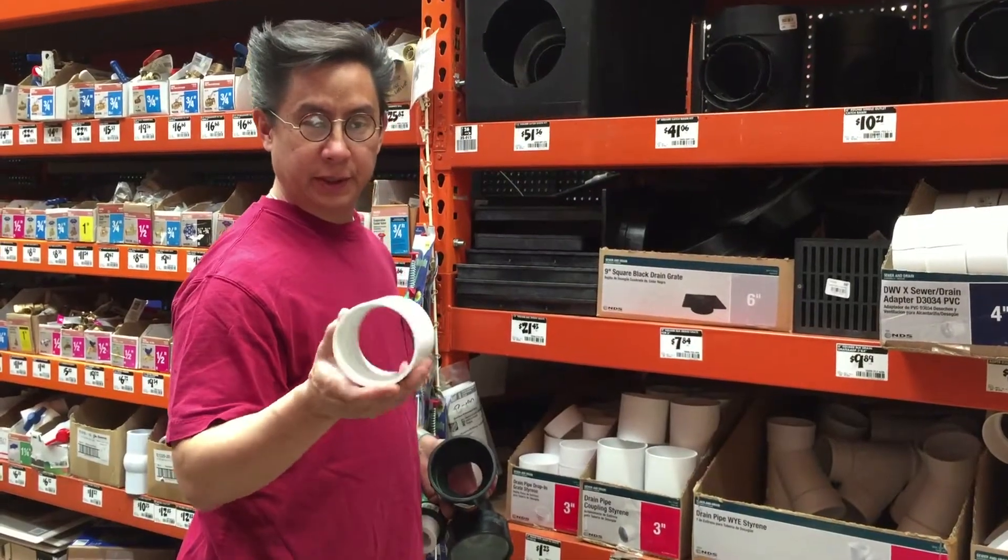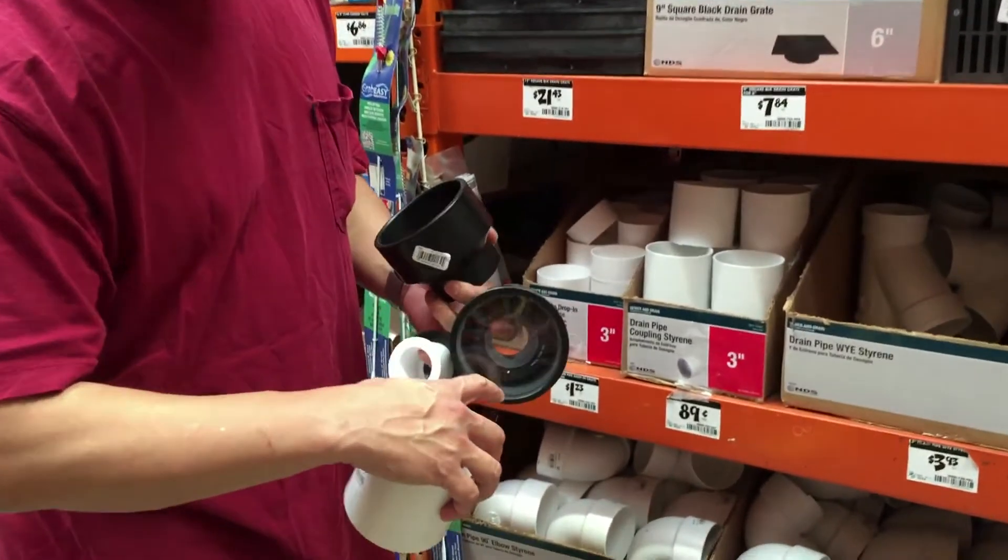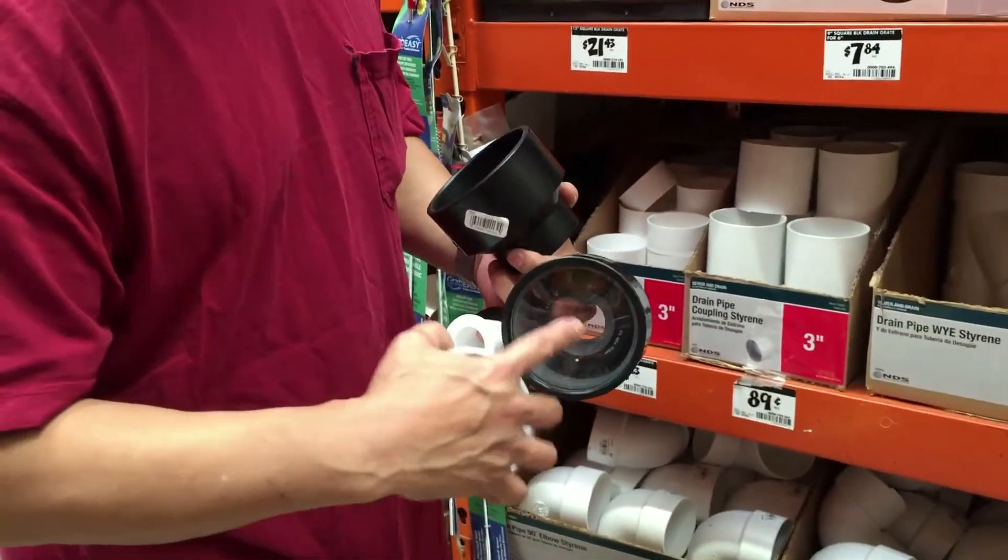For the last piece here, we need this coupler. This coupler fits on the inside here, creating this gray piece that's on the inner piece of the eye here.